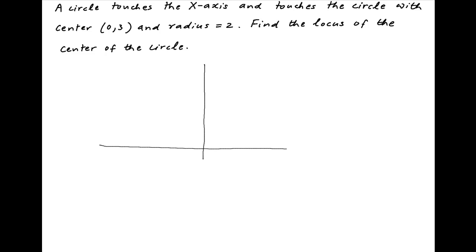We start by depicting this information on the Cartesian plane. The given circle has a center at (0,3). Let's denote this circle by C1.